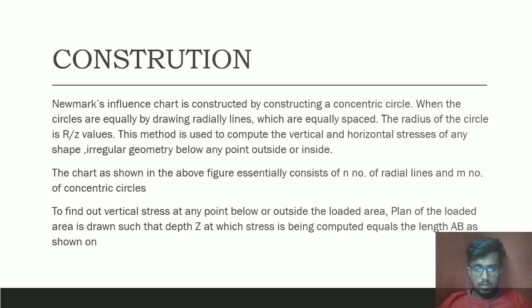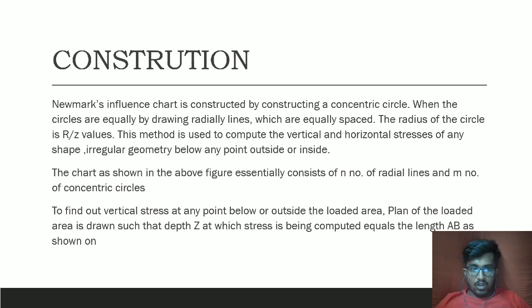Construction: Newmark's influence chart is constructed by drawing concentric circles that are equally spaced, along with equally spaced radial lines. The radius of each circle is determined by the R/Z values. This method is used to compute the vertical and horizontal stresses for loaded areas of any shape or irregular geometry below any point outside or inside. The chart essentially consists of N number of radial lines and M number of concentric circles.